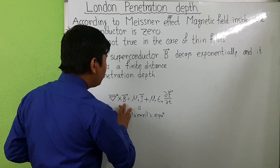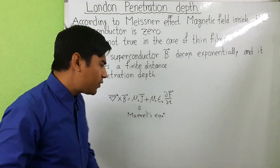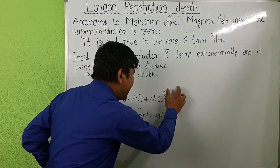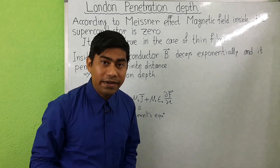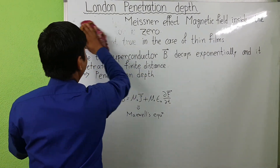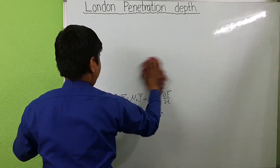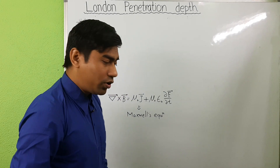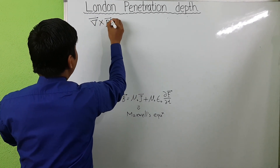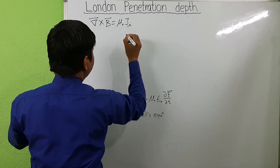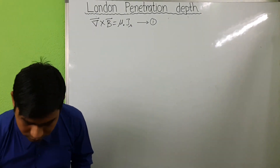To derive the London penetration depth, we start from Maxwell's equation: curl of B equals mu-zero times j, plus mu-zero times epsilon-zero times the time derivative. For the electrostatic case, the time derivative equals zero. So for super-electrons, Maxwell's equation can be written as curl of B equals mu-zero times j_s. Let this be equation one.